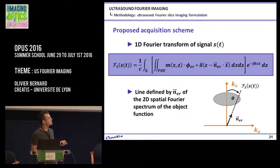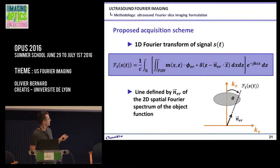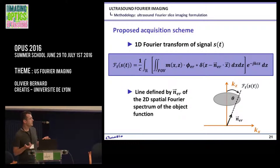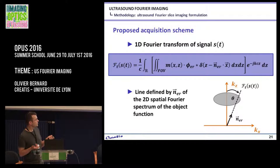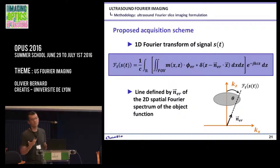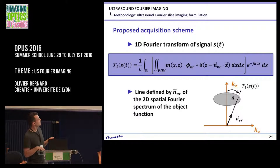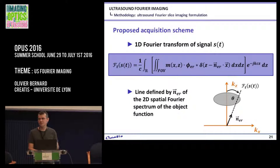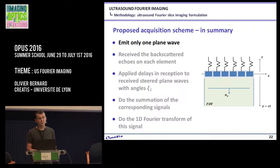You can easily show that it corresponds to the 2D Fourier transform of the object you want to image, but restricted along a line defined by theta equal to xi over 2. The algorithm we propose is very simple to implement.